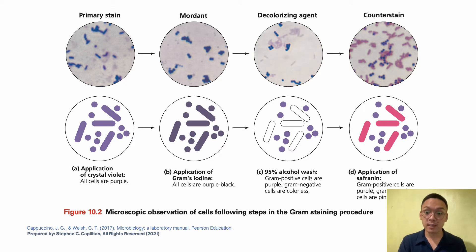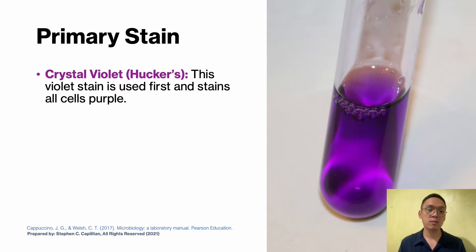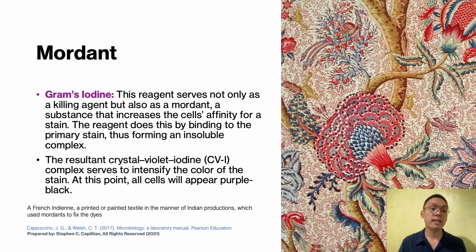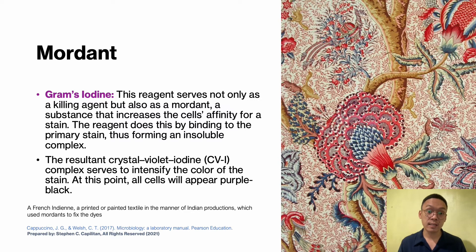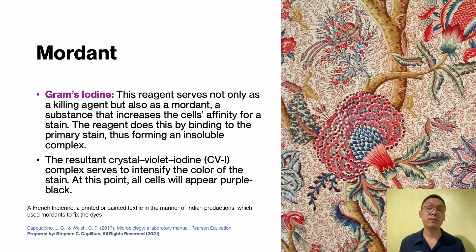The primary stain, crystal violet, is used first and stains all the cells purple. The mordant is Gram's iodine — it serves not only as a killing agent but also as a mordant, a substance that increases the cell's affinity for a stain. It does this by binding to the primary stain, forming an insoluble complex. The resultant crystal violet-iodine complex, or CVI complex, serves to intensify the color of the stain, and at this point cells appear purple-black.